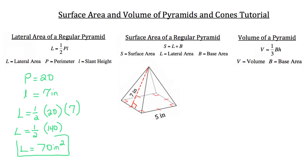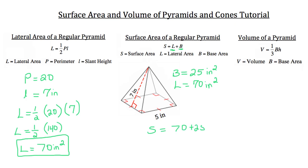Remember, whenever you're dealing with area you're dealing with two dimensions, which means you raise your unit to the power of two. Now let's deal with surface area. Surface area is just the lateral area plus the area of the base. The base is a square, so its area is side squared: 5 squared equals 25 inches squared. Our lateral area is 70 inches squared, so the total surface area is 70 plus 25, which equals 95 square inches.